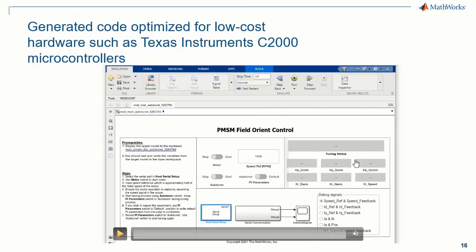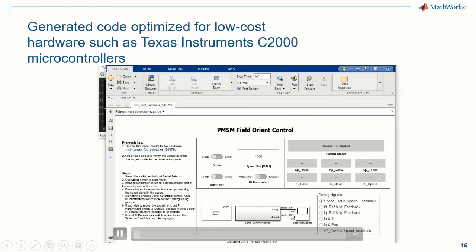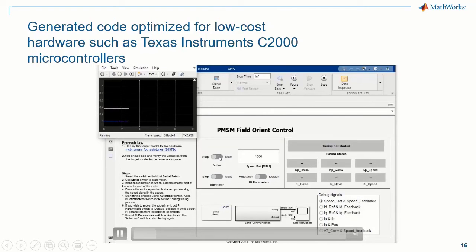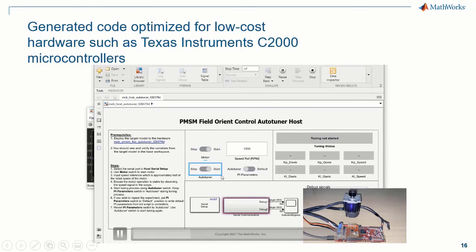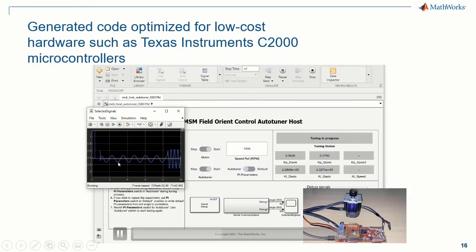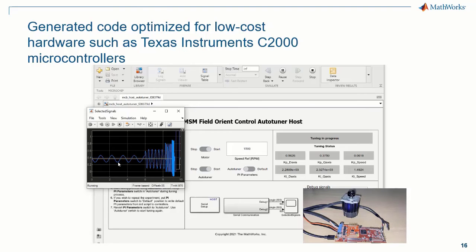Here you can see another Simulink model that acts as a host model and control interface to control the auto-tuning process. I'll start running the model, start the motor, and you can see the motor start to spin and reach a steady state. Then you start the auto-tuning process and you will see the tuned KP and KI gains of the current and speed loops come into picture. The signal shown reflects the sinusoidal perturbations being injected by the auto-tuner into the physical plant. The auto-tuner records the resultant output from the plant and estimates a plant frequency response, which is then used to tune the KP gains for the current and speed loops.